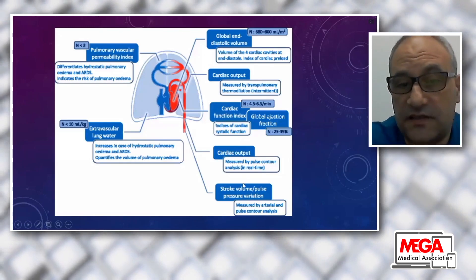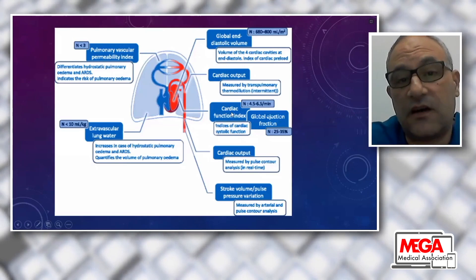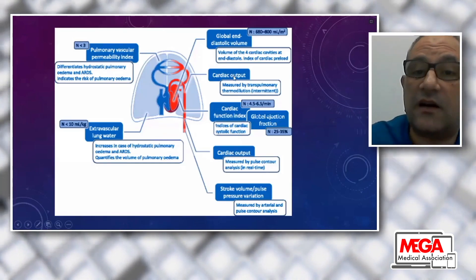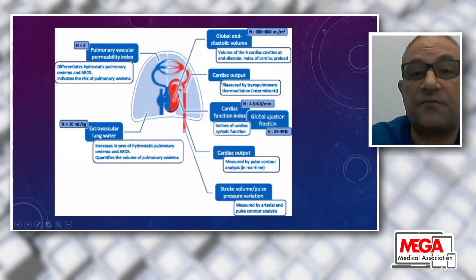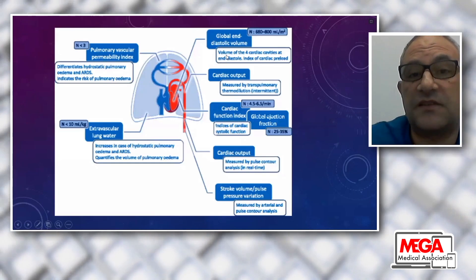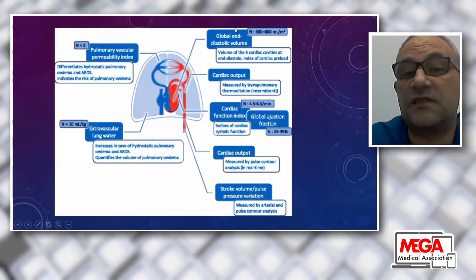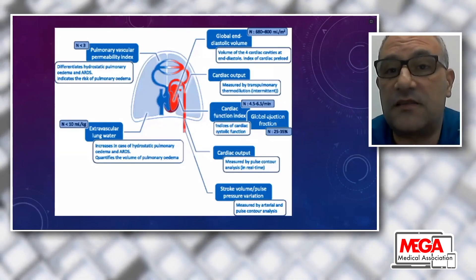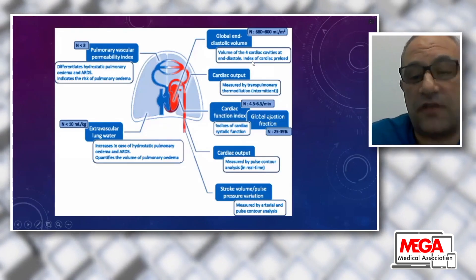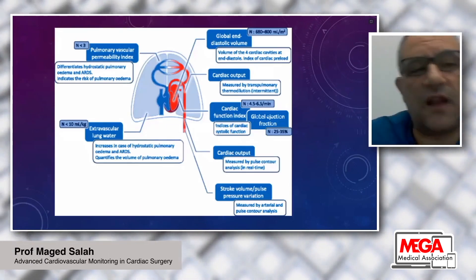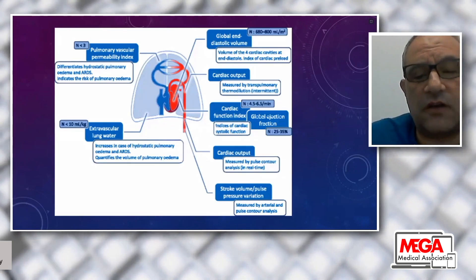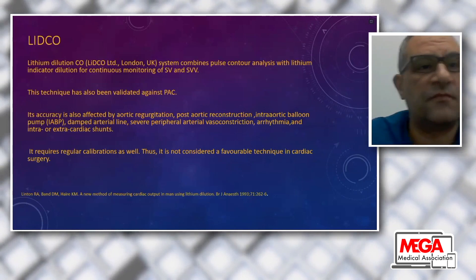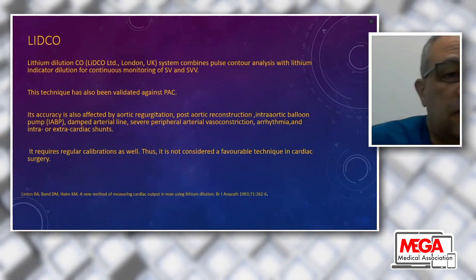PiCCO also detects cardiac output by pulse contour analysis, stroke volume, pulse pressure variation, cardiac function index, and global ejection fraction—normally 25–35%. Cardiac output measured by transpulmonary thermodilution is intermittent, not continuous like pulse contour analysis. Global end-diastolic volume—the volume of blood in all four cardiac chambers—estimates heart volume and preload status. Combined with pulmonary vascular permeability and extravascular lung water, PiCCO can differentiate cardiac from non-cardiac pulmonary edema.